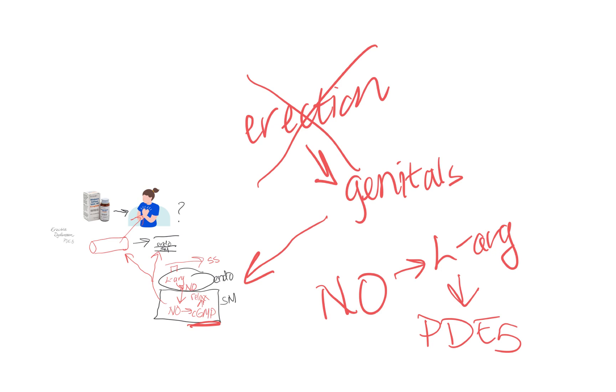That means if we're treating erectile dysfunction, not only can we take advantage of nitric oxide donors, we also need to prevent the erection from stopping by giving something that inhibits the enzyme that would stop that cascade. So we're looking at medications that give some nitric oxide and also inhibit the breakdown of it.